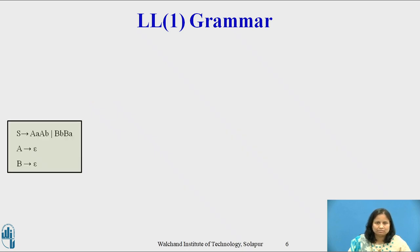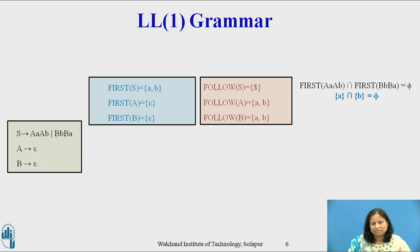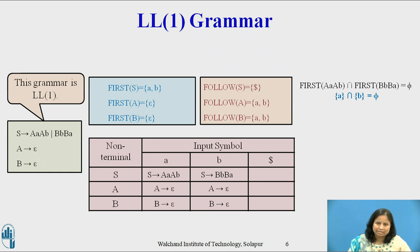Consider an example of LL1 grammar. Consider the grammar: S derives A a, A b or B b a; A derives epsilon; B derives epsilon. Looking at the first and follow sets, first(A a, A b) that is {a} intersected with first(B b, B a) that is {b} equals φ. The condition of LL1 grammar is satisfied and the parsing table for this grammar does not contain multiply defined entries, hence this grammar is LL1.